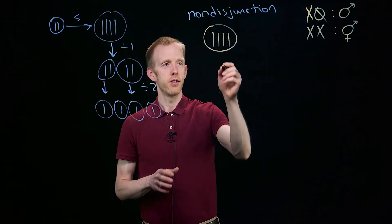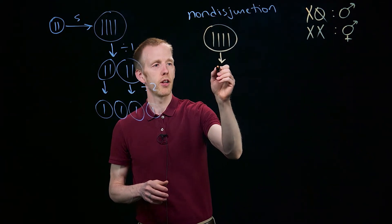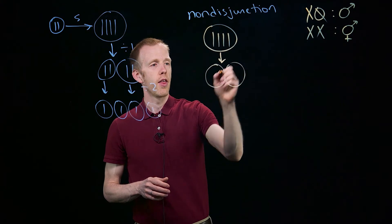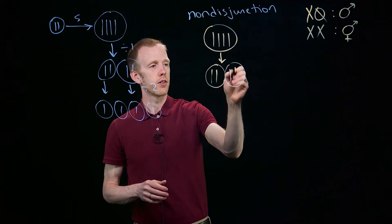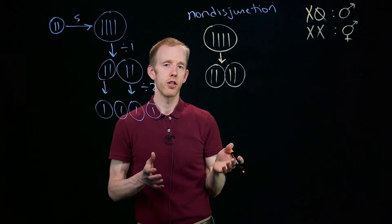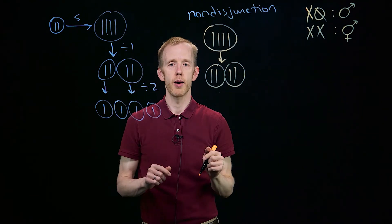And what happens is, in that first cell division, we can imagine that those sister chromatids segregate as they should during that first division. So these two steps are equivalent.